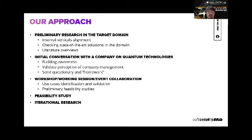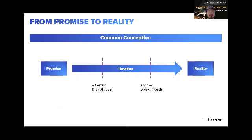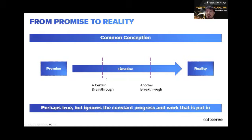To that end, we've developed a certain approach around workshopping and feasibility studies, incorporating it into our broader R&D approach, where we investigate both classical and quantum methods to really compare them. People often view the path from promise to reality as: as time goes by, there's going to be a breakthrough, and then another breakthrough. But people often forget about the constant work and progress that happens in between each of these breakthroughs.